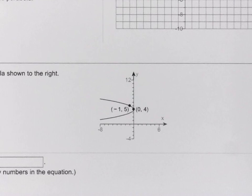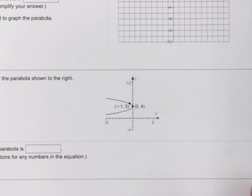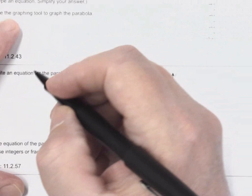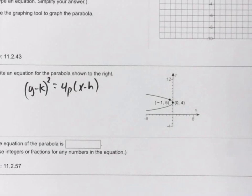So let me zoom out a little bit so I can do some writing. So let's go ahead and get the standard equation for a parabola that opens to the left. In that case, it's going to be (y - k)² = 4p(x - h).